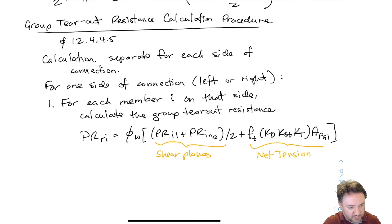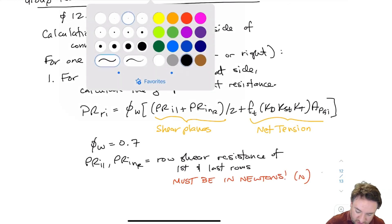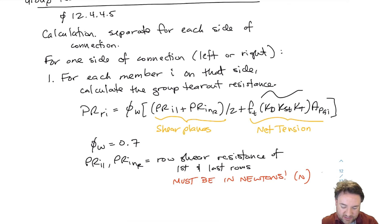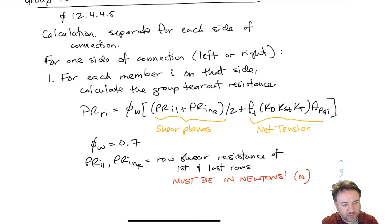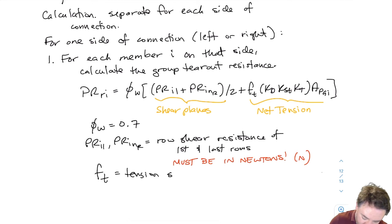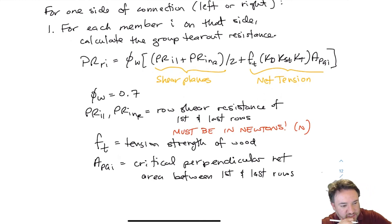We have to be careful that P_ri1 and P_ri·nr must be in Newtons for this equation to work in terms of units. f_t is in MPa and A_pgi is in mm², so f_t times A_pgi gives Newtons. To add the two terms together, the shear term on the left must also be in Newtons. This is a common tripping point when using this equation.